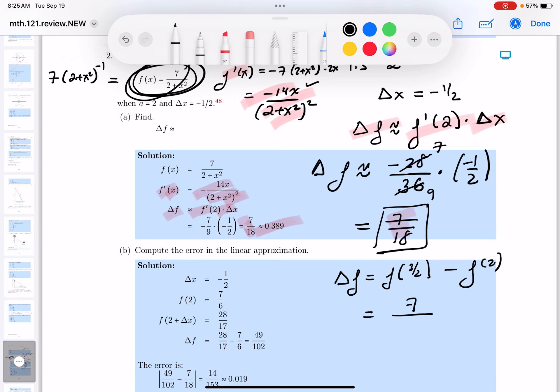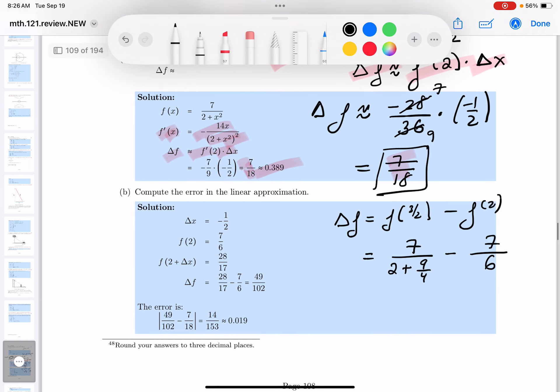And this is going to be 7 over 2 plus 9 quarters minus 7 over 2 plus 2 squared is going to be 6. That's not so bad. I'm going to keep doing the arithmetic on it. And this is the exact value, by the way. We have the approximate. I've got the exact over here.